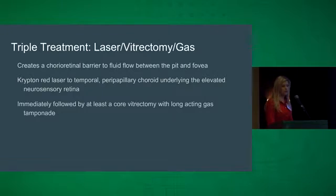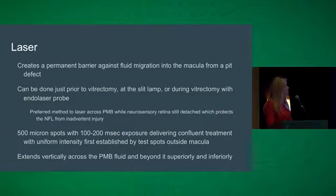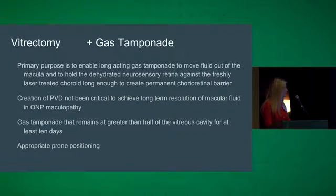The triple treatment involves laser creating a chorioretinal barrier to fluid flow between the pit and the fovea. A krypton red laser is applied to the temporal parapapillary choroid underlying the elevated neurosensory retina, immediately followed by at least a core vitrectomy with long-acting gas tamponade. The laser creates a permanent barrier to fluid migration into the macula from the pit defect, and can be applied just prior to vitrectomy at the slit lamp or during vitrectomy with a laser probe. The preferred method is to laser across the bundle while the neurosensory retina is still detached, using 500-micron spots with 100–200 millisecond exposure with confluent uniform intensity, establishing test spots outside the macula. The vitrectomy and gas tamponade serve to move the fluid out of the macula and hold the dehydrated retina against the freshly laser-treated choroid long enough to create this permanent chorioretinal barrier.